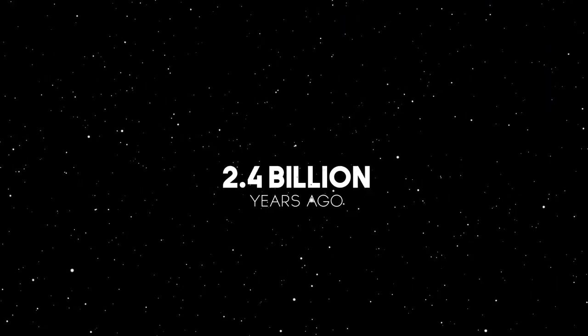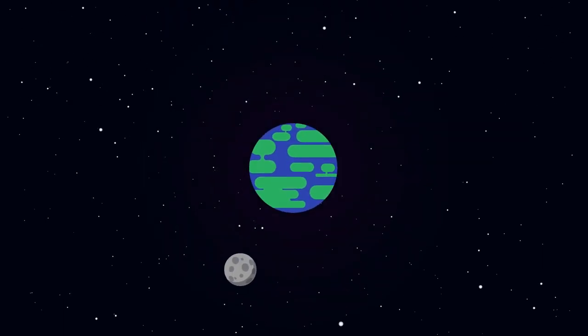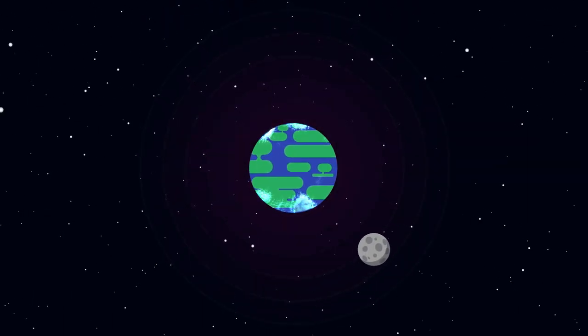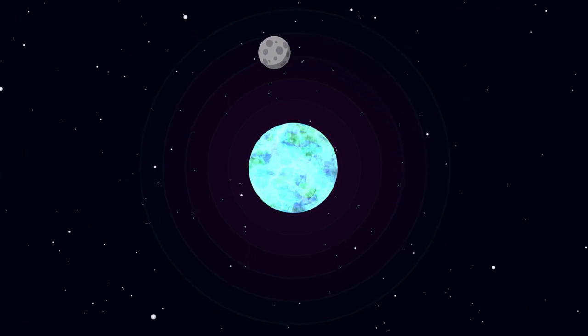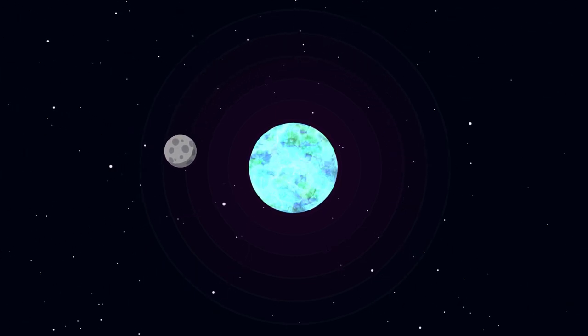2.4 billion years ago, a disaster struck and the Earth froze. Ice that spread from the poles covered the planet in a thick layer, making it a snowball Earth. This has been known as the greatest ice age in the history of the planet.